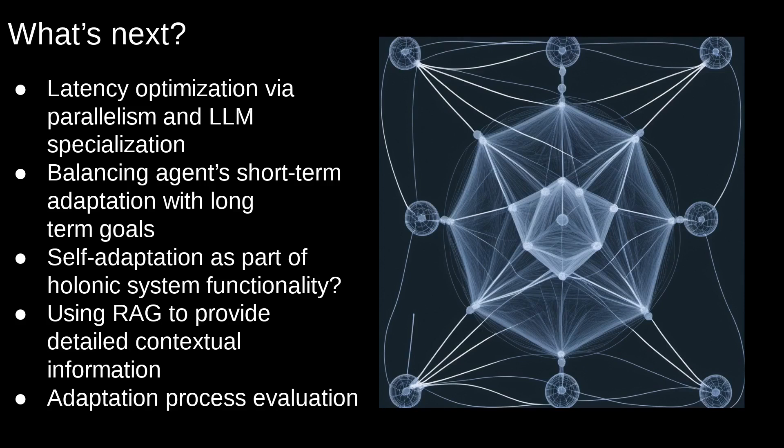Third, while LLMs simplify agent's performance evaluation and self-correction, these processes are still complex. They might require more autonomy and control, possibly by treating them as an independent agent working together. This brings us to the concept of a holonic agent architecture, where a single agent is composed of multiple specialized agents working in parallel.